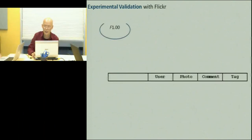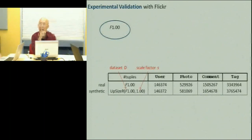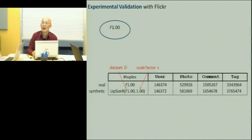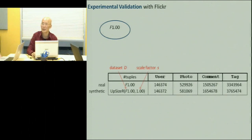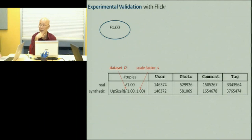We experimented by downloading Flickr data. F1 has 1.5 million comments and half a million photographs. I'm upsizing it with scale factor 1 — that means making a completely synthetic copy. This table compares the real table sizes and the synthetic table sizes. The photo table is generated by degree distribution — you can already see it's not very accurate. The comment and tag tables are generated by co-clustering.